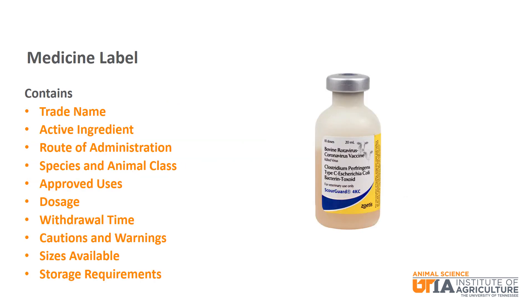It is imperative to read, understand, and follow all of the instructions on the medicine label. The medicine label includes the following important items: trade name, active ingredient, route of administration, species and animal class, approved uses, dosage, withdrawal time, cautions and warnings, sizes available, and storage requirements.